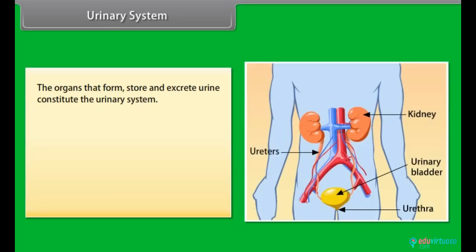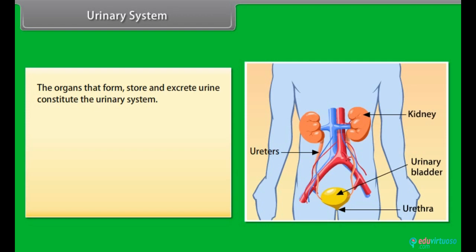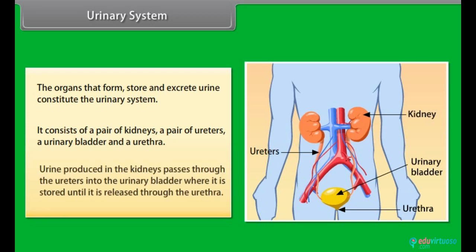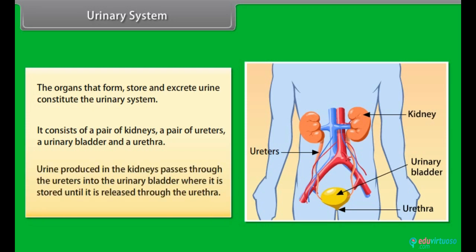The organs that form, store, and excrete urine constitute the urinary system. It consists of a pair of kidneys, a pair of ureters, a urinary bladder, and a urethra. Urine produced in the kidneys passes through the ureters into the urinary bladder, where it is stored until it is released through the urethra.